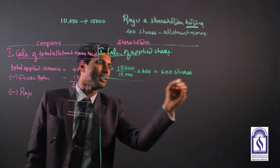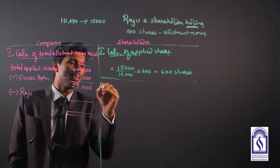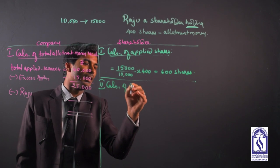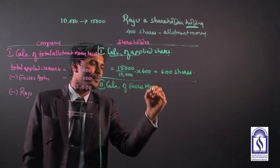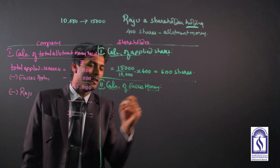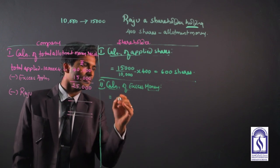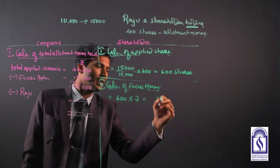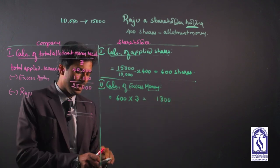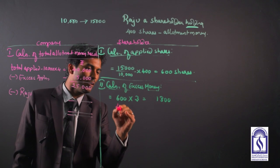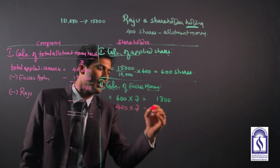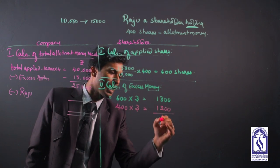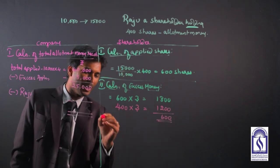Step number two: calculation of excess money paid by Raju. Under this, 600 shares that Raju had applied into 3 rupees, it comes around 1,800 paid. Now Raju was allotted only 400 shares due to the excess application and then 1,200 is the money transferred to share capital. 600 is the excess application money.